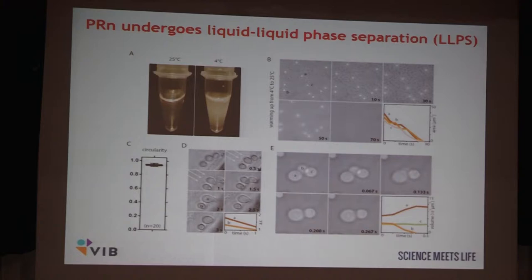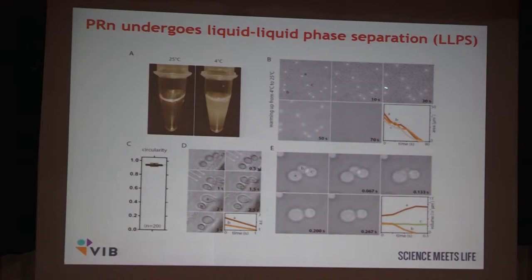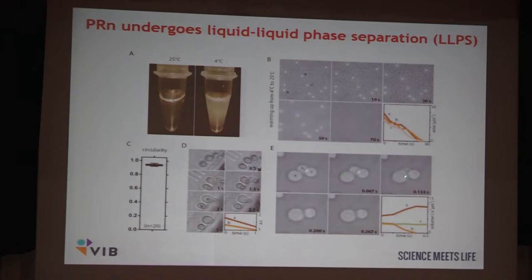By serendipitous experimentation, it was shown that the DPRs undergo phase separation. That's a solution of PR20 or PR30 at high temperature in the presence of polyethylene glycol as a crowding agent. Nothing happens at high temperature. But if you cool down to four degrees, the solution becomes opaque, and under the microscope you can see small droplets. These are liquid-like droplets, as we have formally shown. They are completely reversible — if you heat back to 25 degrees, they disappear. Under shearing they change shape, but upon cessation of the shearing force they regain a completely spherical shape. They can also fuse together like little droplets.